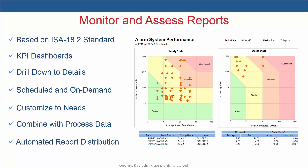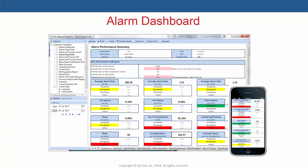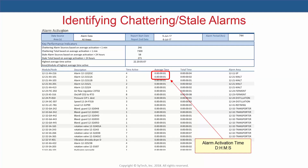Now let's take a look at some example reports. This alarm dashboard report displays ISA 18.2 performance KPIs with an evaluation rating for each. It's easily published to web browsers and mobile devices and is backed up by detailed analysis reports, such as one which helps identify chattering and stale alarms, or alarms with extremely short and long activation times. These alarms both distract operators and can skew the results of assessment reports.